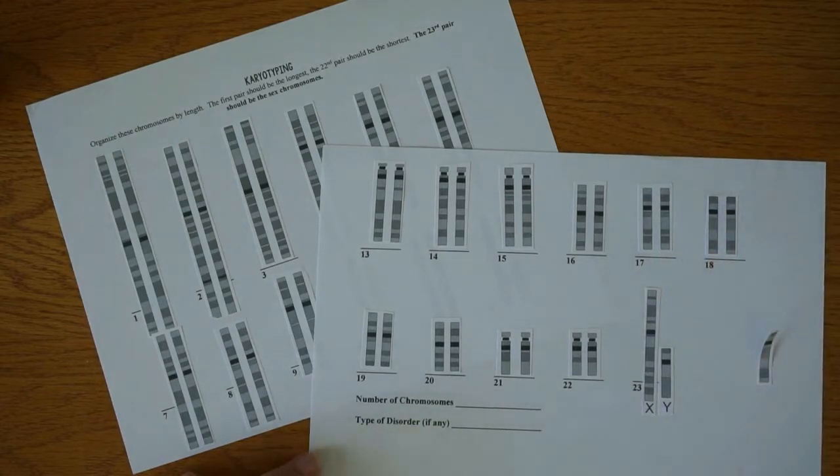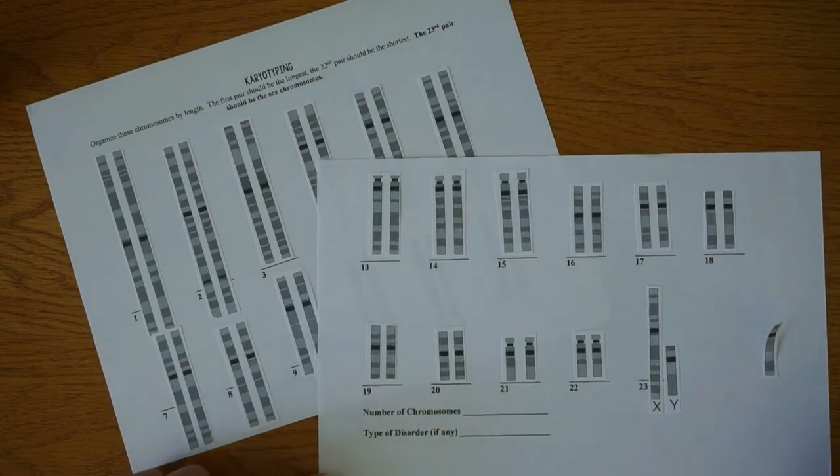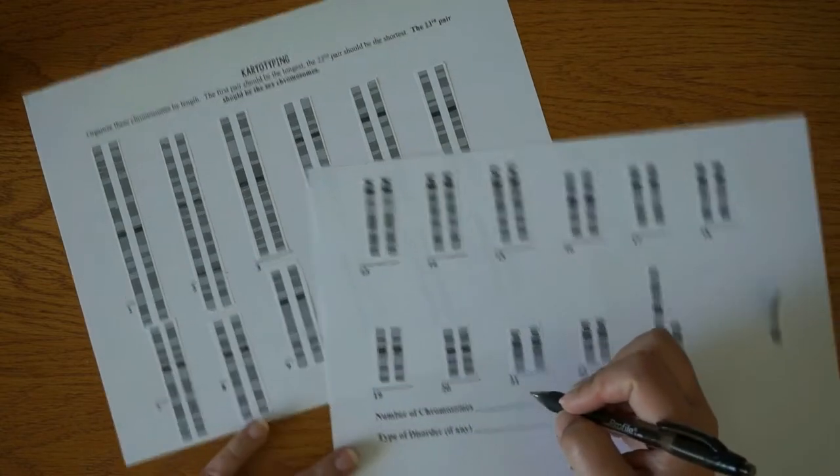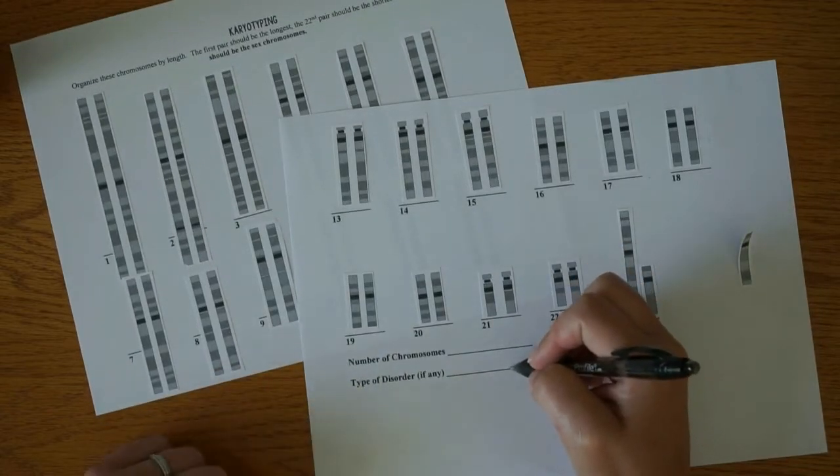And then you are going to write down the number of chromosomes total that your person has and the type of disorder, if any.